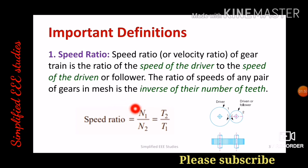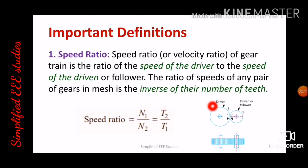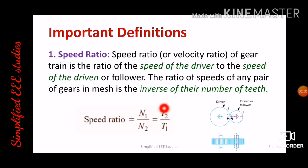We can write N1 by N2 equals T2 by T1, where N1 is the speed of the driver, N2 is the speed of the driven or follower, T2 is the number of teeth of the driven gear, and T1 is the number of teeth of the driver gear. Taking this ratio gives the speed ratio N1 by N2. From this we conclude that speed is inversely proportional to number of teeth.